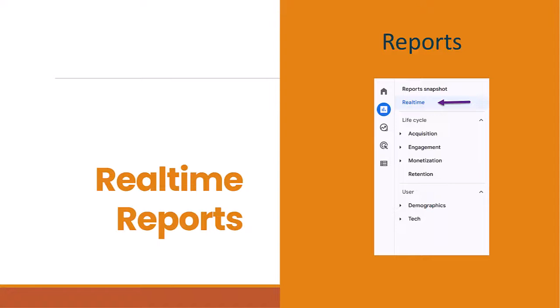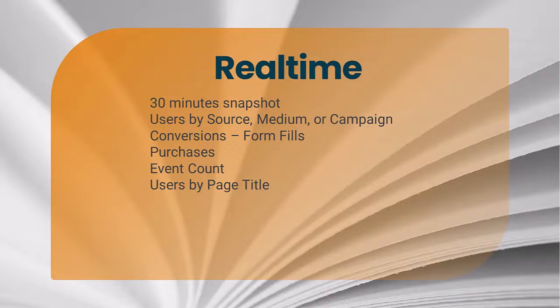Real-time reports are located in the report snapshot on your left-hand column. Some of the main metrics you can track include a 30-minute snapshot of your visitors to your website or app. Remember, GA4 can be used whether you have an app for your website or for your company.